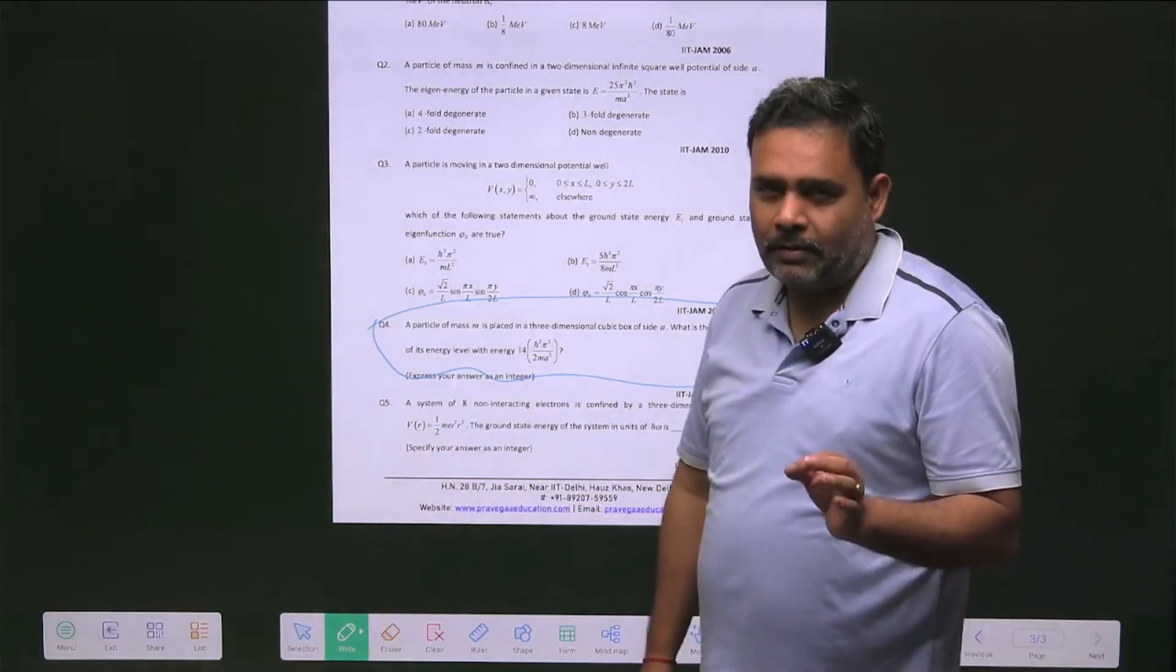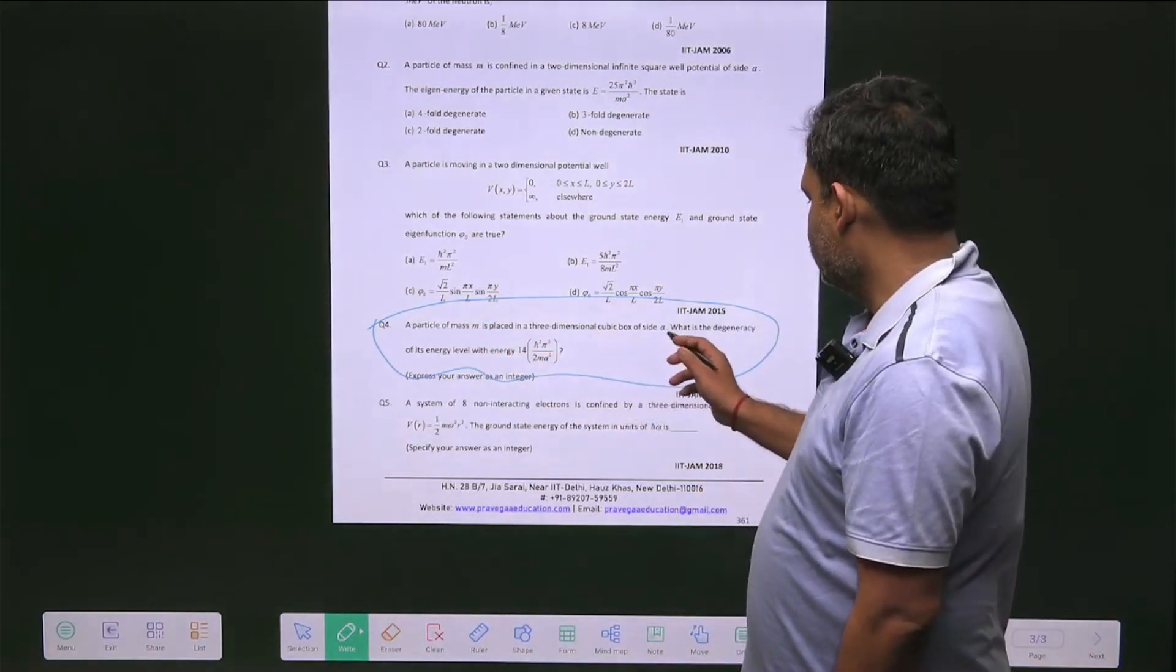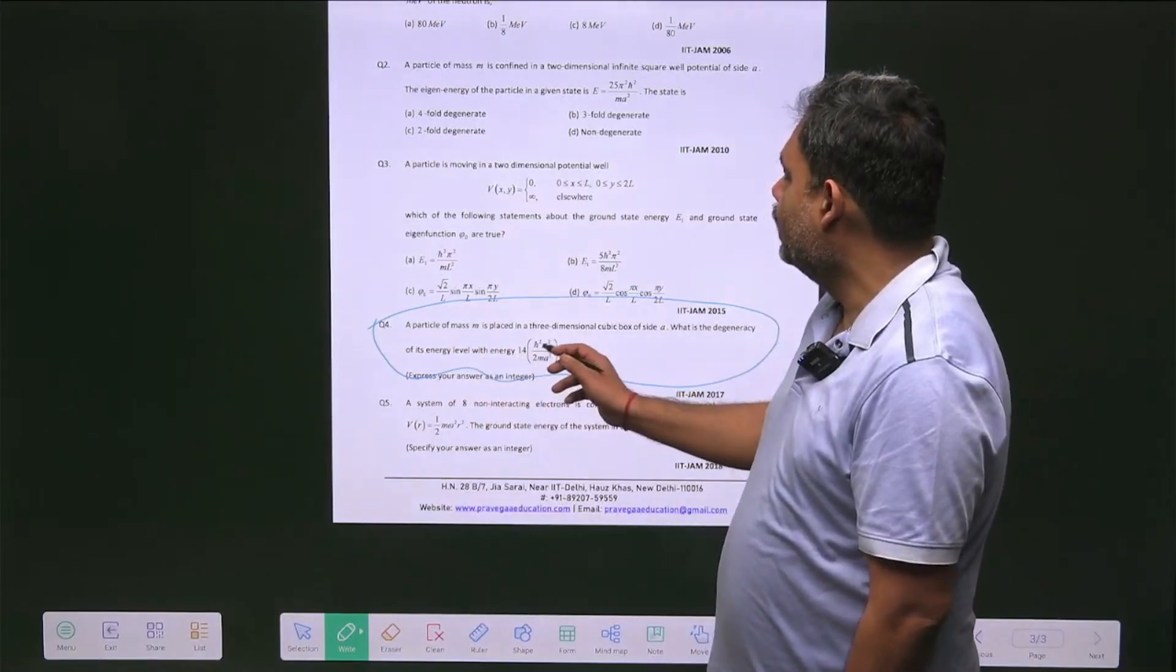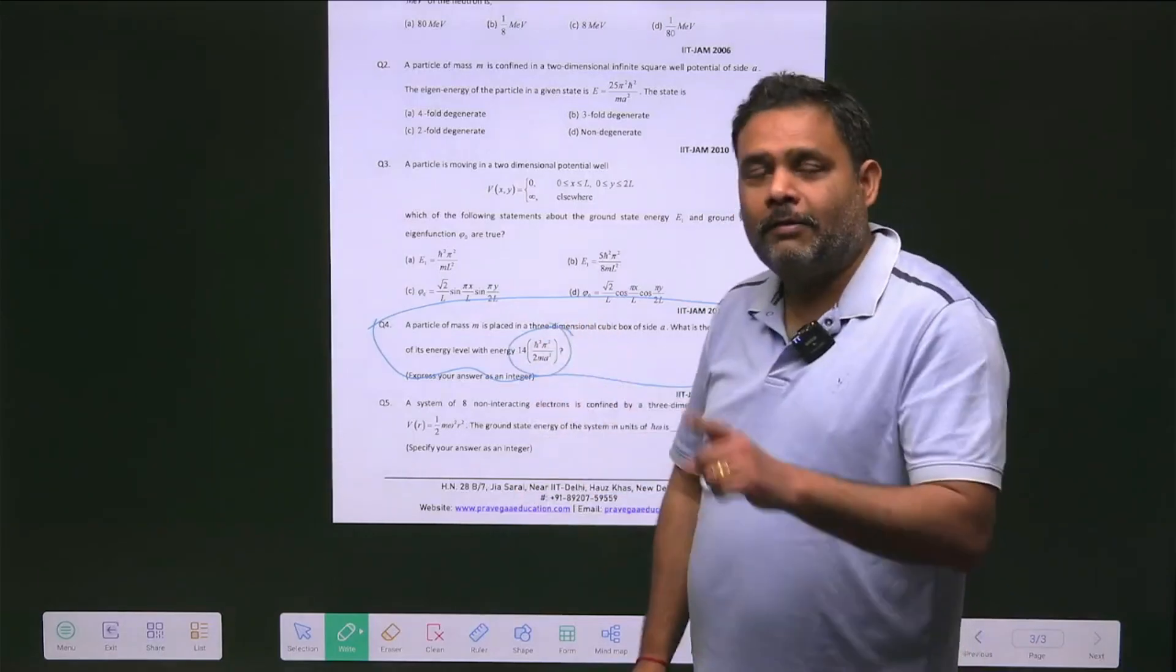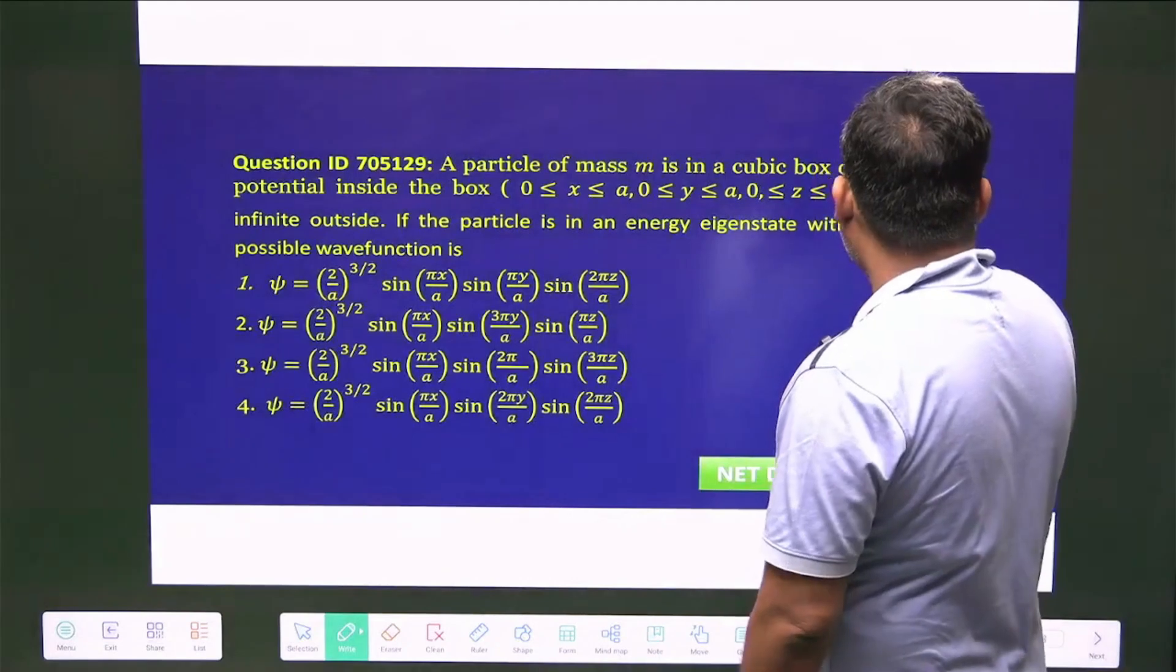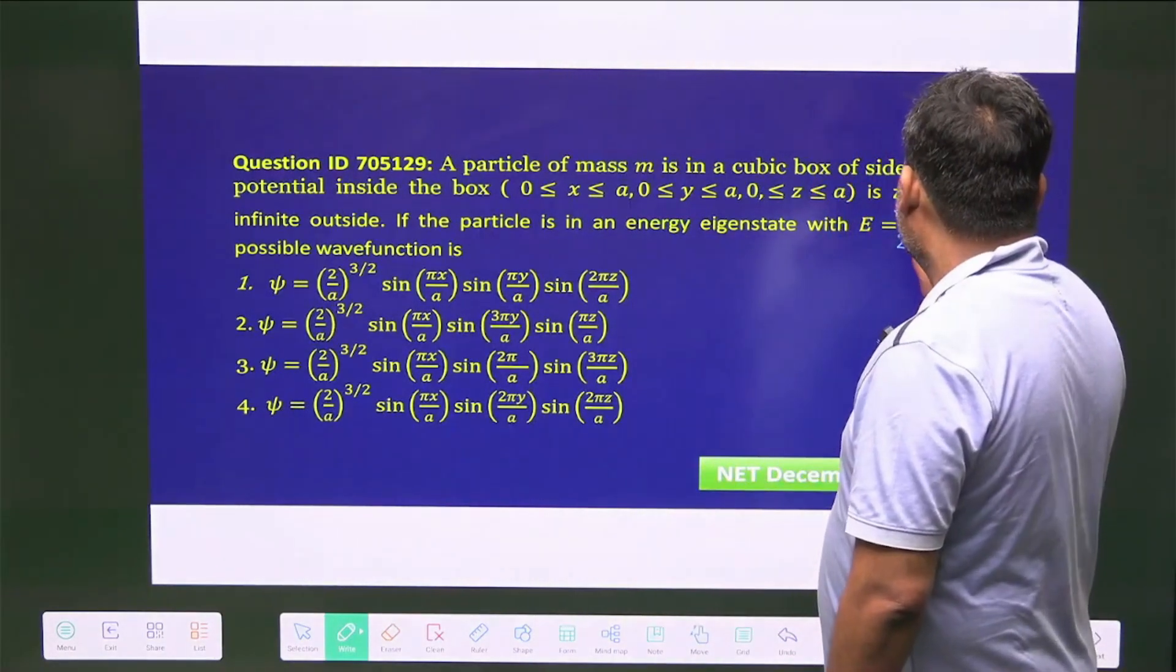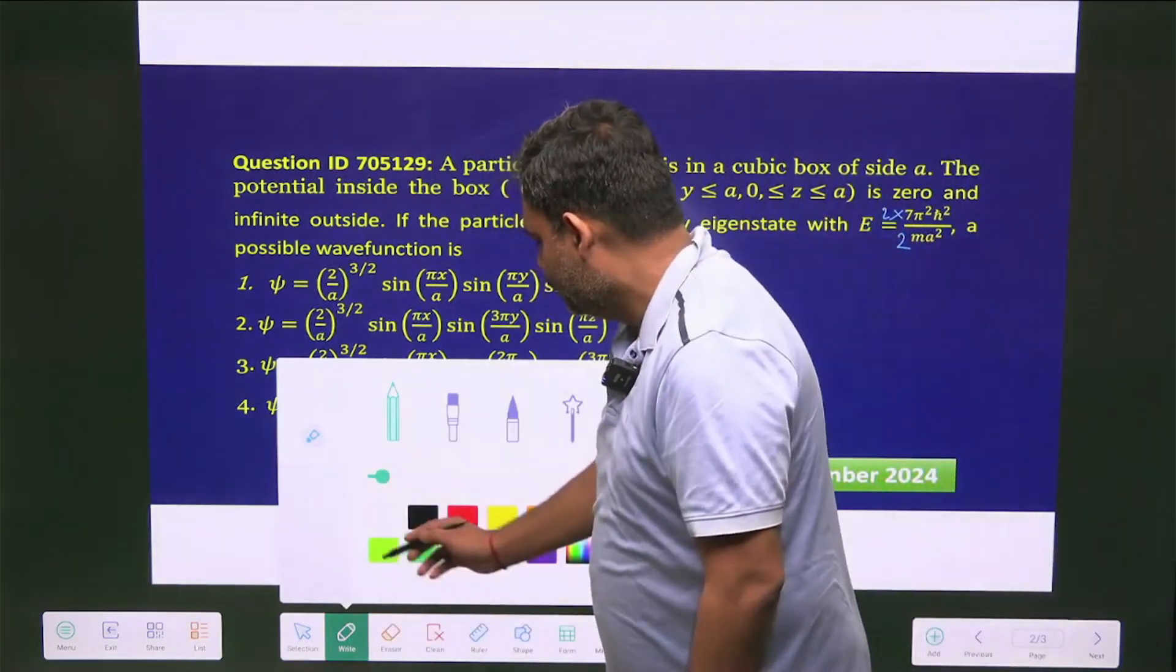Exactly the same question: a particle of mass m is placed in a three-dimensional cubic box of side a. What is the degeneracy of the energy level with energy 14π²ℏ²/2ma²? The same energy—14π²ℏ²—and here you'll find that is 7π²ℏ². But if you multiply this with two, then this value equals actually 14.